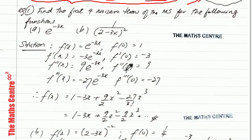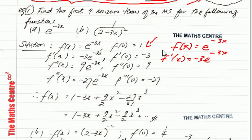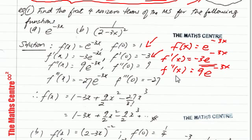Let's start with part A. We have f of x equals e to the power of minus 3x. When you plug in x equals to 0, you get f of 0 equals 1. Differentiating, f prime x equals minus 3 e to the power of minus 3x, so f prime 0 equals minus 3. Differentiating again, f double prime x equals 9 e to the power of minus 3x, and f double prime 0 equals 9.